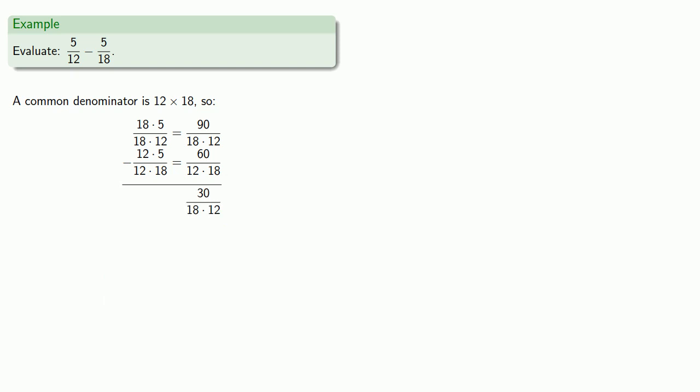Again, if it's not written down, it didn't happen. This is what we got when we subtracted five-twelfths minus seven-eighteenths.